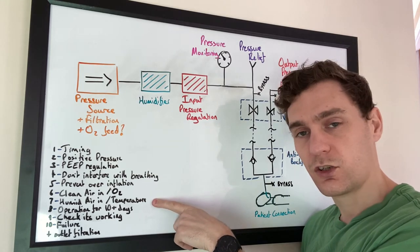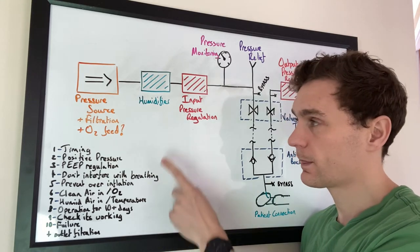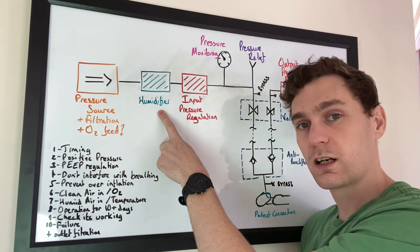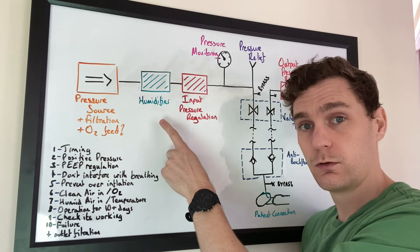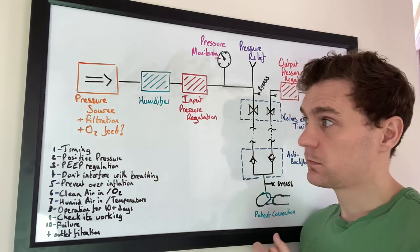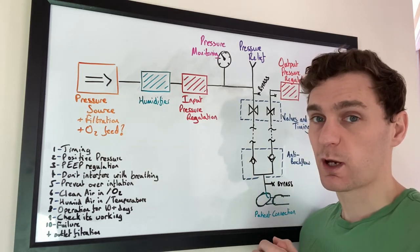Number seven, humid air and temperature. This diagram only covers humidity, it doesn't cover temperature. So if the temperature is low, then this system is going to struggle and the patient is going to struggle.